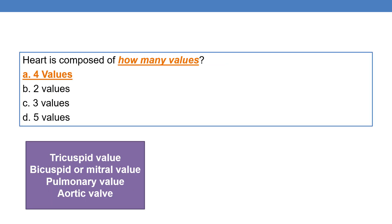Heart is composed of how many valves? The heart has four valves. What are they? Tricuspid valve, bicuspid or mitral valve, pulmonary valve, and aortic valve. These are the four valves of the heart. So the answer is four — the heart is composed of four valves.